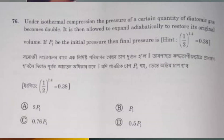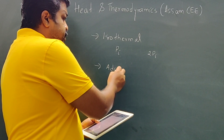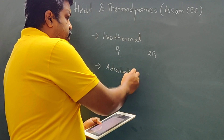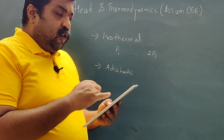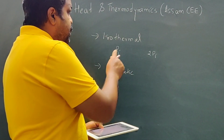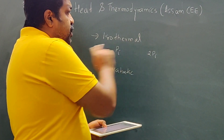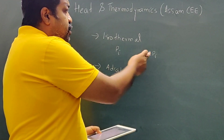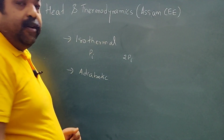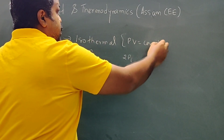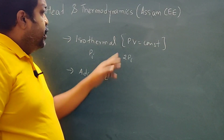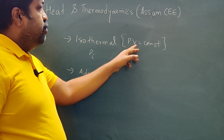The gas is then allowed to expand adiabatically to restore the original volume. In the isothermal process, PV is constant, meaning the product of pressure and volume is constant.